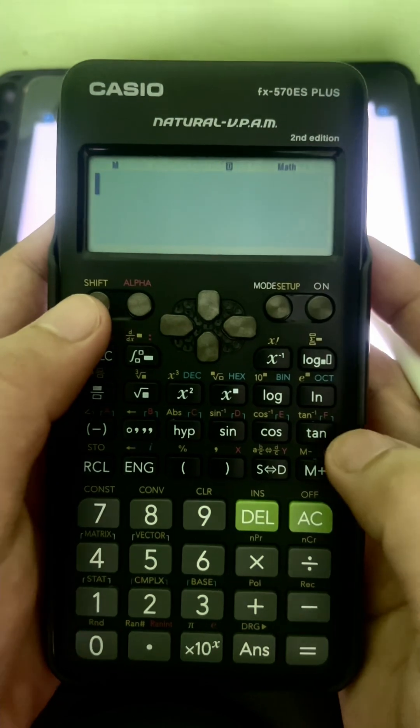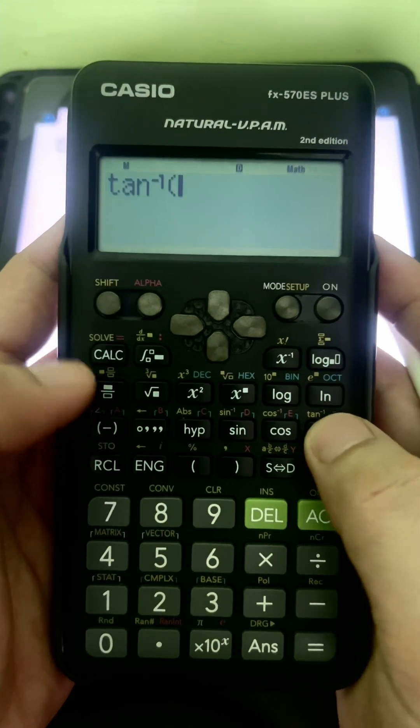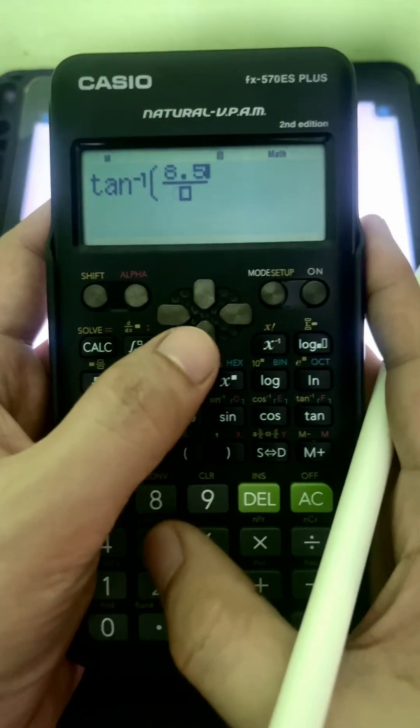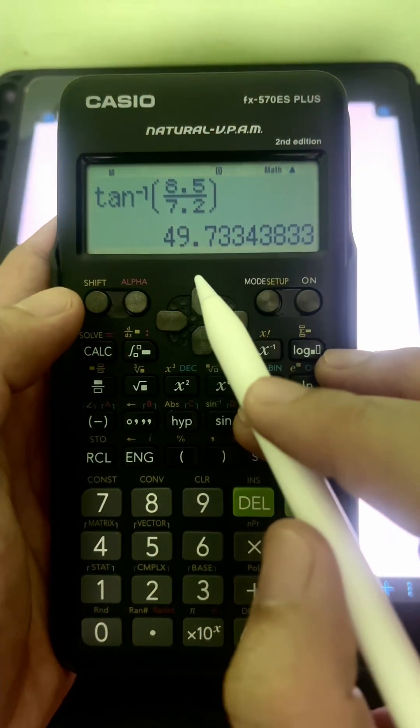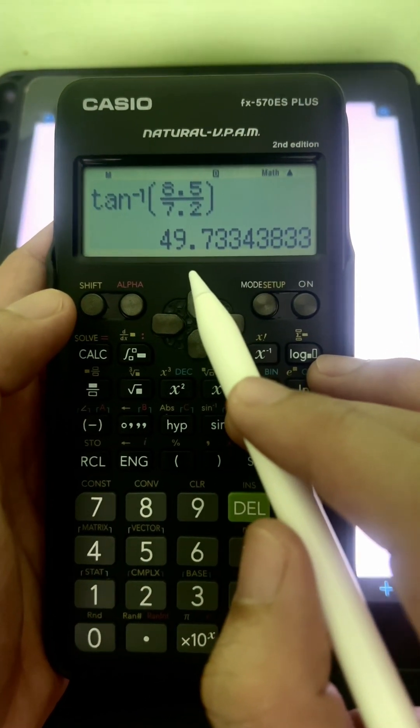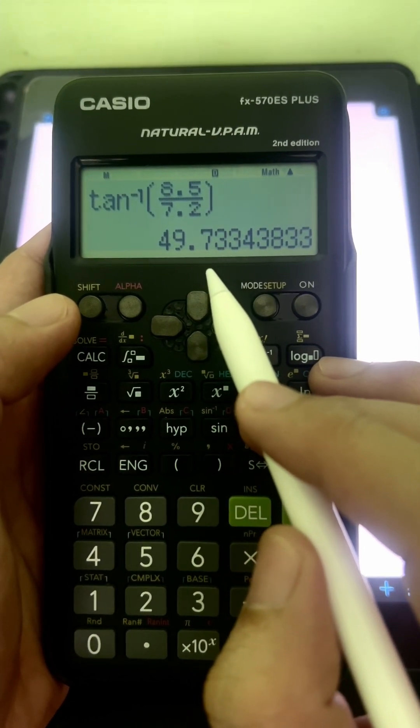So using a calculator, you can input that as arctangent of 8.5 over 7.2, press equal. So the value of angle A is approximately 49.73 degrees.